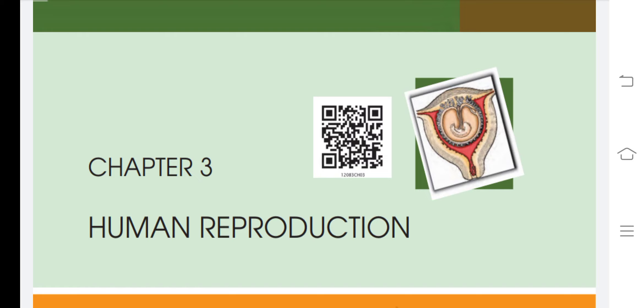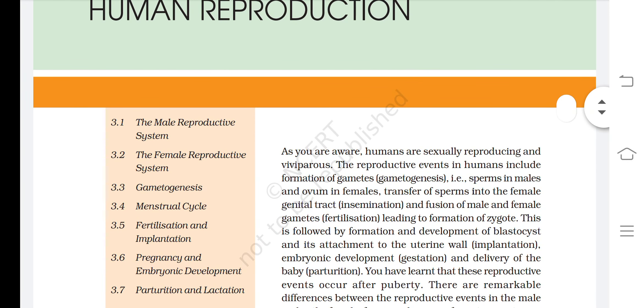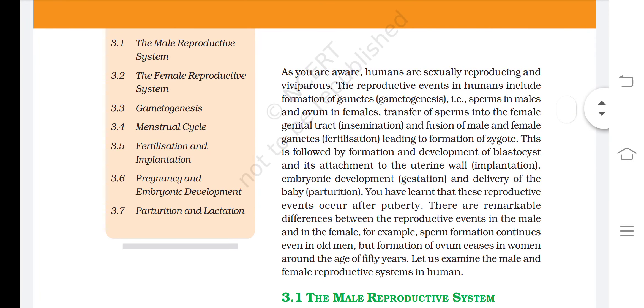Class 12 biology chapter 3: human reproduction. Humans are sexually reproducing and viviparous. The reproductive events in humans include formation of gametes — gametogenesis — that is sperms in males and ovums in females.